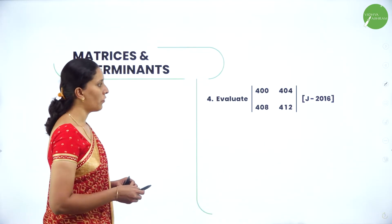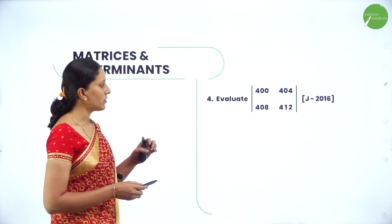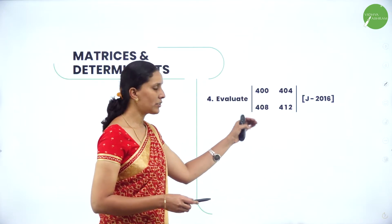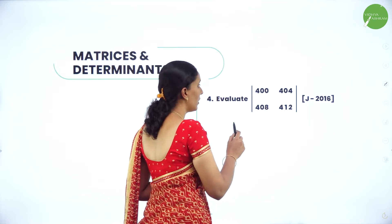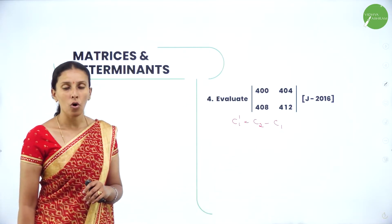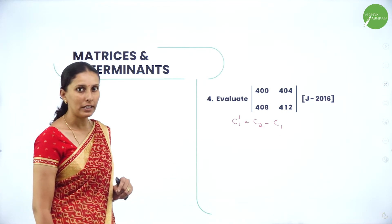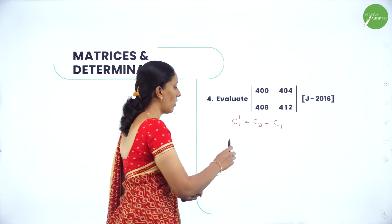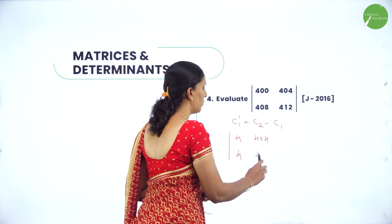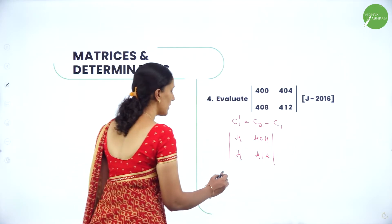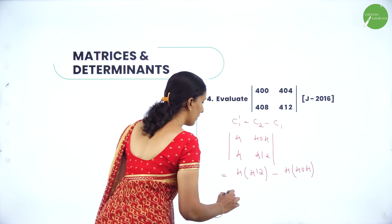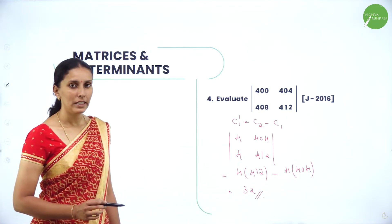Next, evaluate the determinant of [400, 404; 408, 412]. You can directly compute 400×412 minus 408×404, or use elementary column operations: take column 1 as column 2 minus column 1. This gives the new determinant [4, 404; 4, 412], which equals 4×412 minus 4×404. Multiplying and evaluating gives the answer 32.